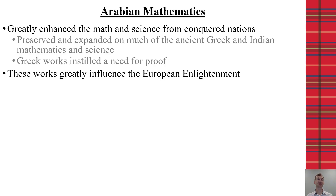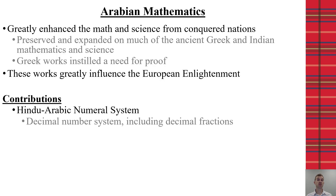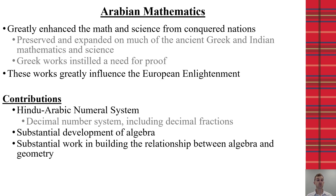Some of the key concepts we attribute to Arabian mathematicians include the improvement of the Hindu-Arabic numeral system. They took the Indian numeral system, enhanced it to include decimal numbers, decimal fractions, and the number zero — and those are the numerals we use today in our Hindu-Arabic numeral system. They also overwhelmingly improved and developed our concepts of algebra.